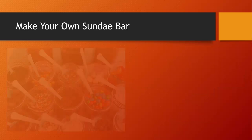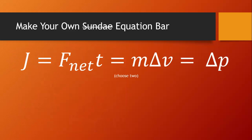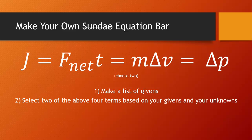Now it's time for the make your own equation bar. Here we have four terms that are all equal to each other. This, however, is not an equation. An equation has one equal sign and a term on either side. So what we're going to do is pick two of these to create an equation. The first step will be to make a list of givens. The next step will be to select two of those terms based on our givens and our unknown. We'll set those terms equal to each other and we'll solve.